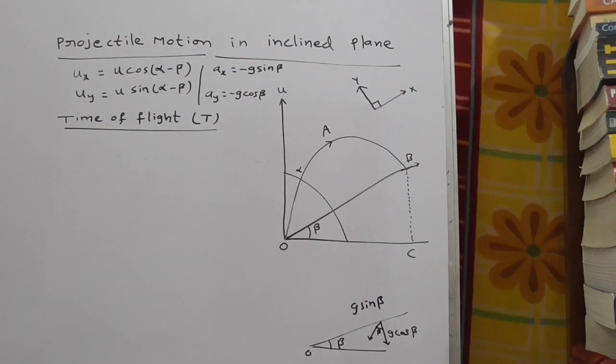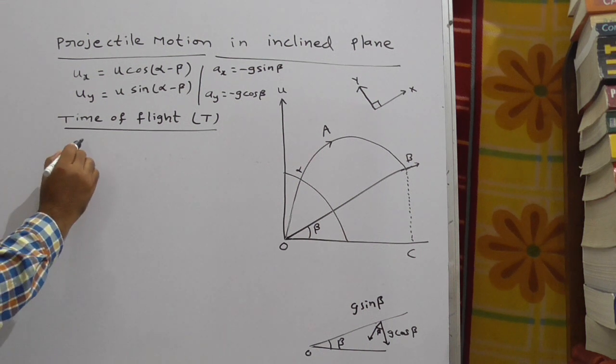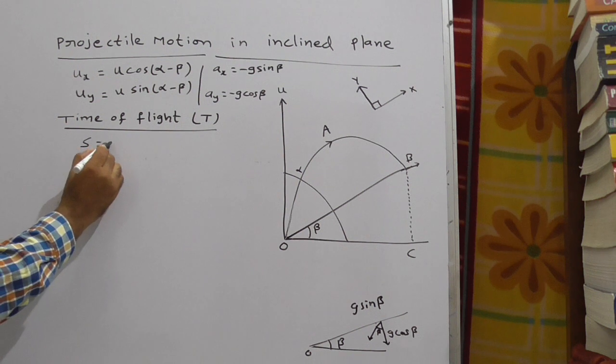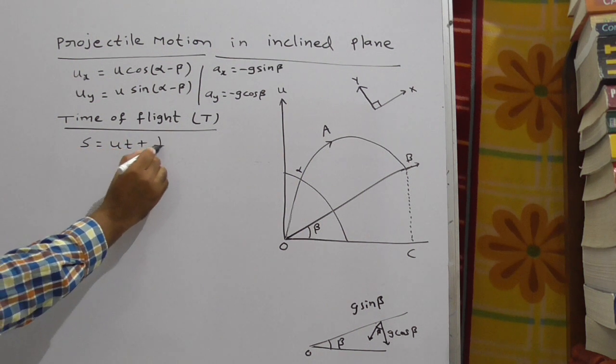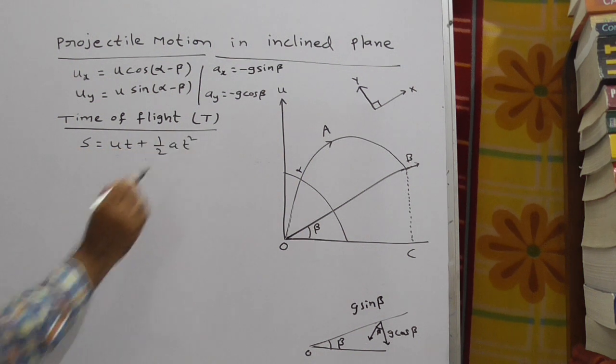Here we have to find time of flight T. So again, at one time flight comes down. With respect to y-axis, we have to calculate this. First, I am taking again the general formula, that is s is equal to ut plus half a t square.